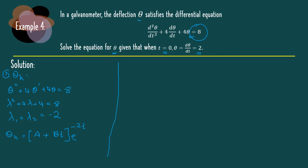Next, we find theta p based on f(t). Our f(t) is equal to 8, a constant. Based on the table, theta p is equal to a constant t multiplied by t to the power of s. Before differentiating, let's compare theta p with theta h — we don't have any same element, since theta h involves exponent terms. So s is equal to 0, and theta p is equal to c only.